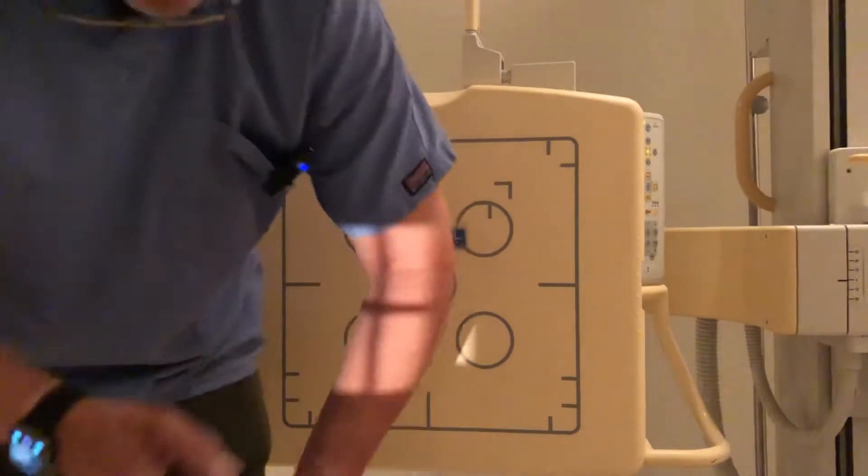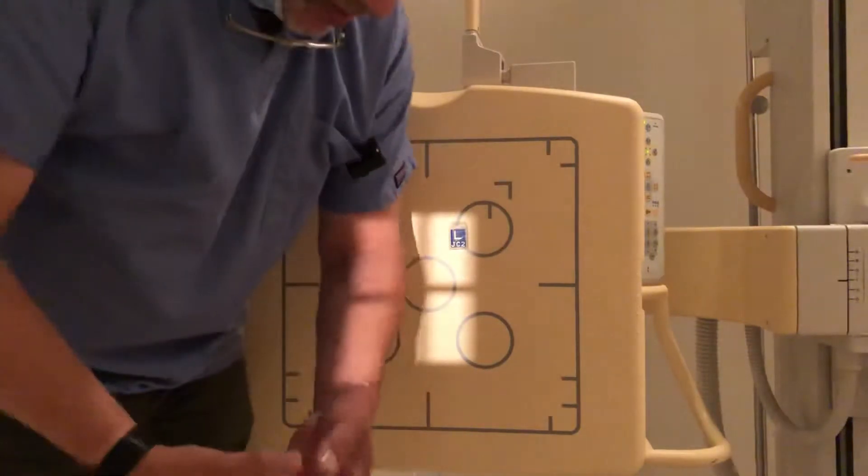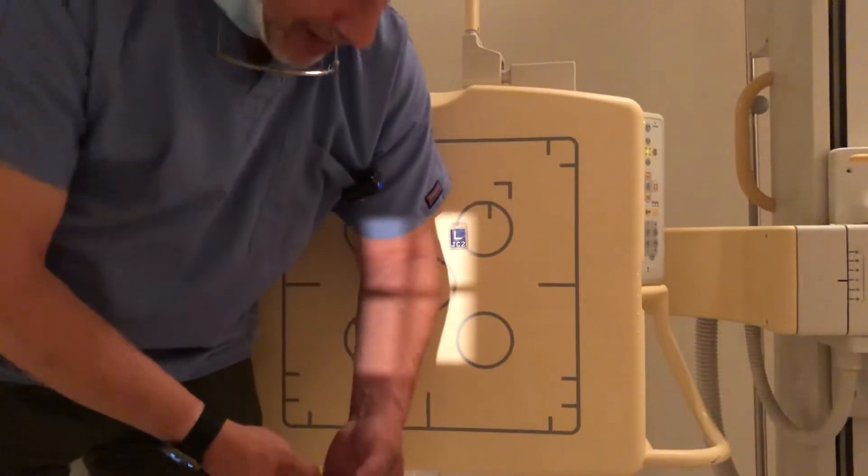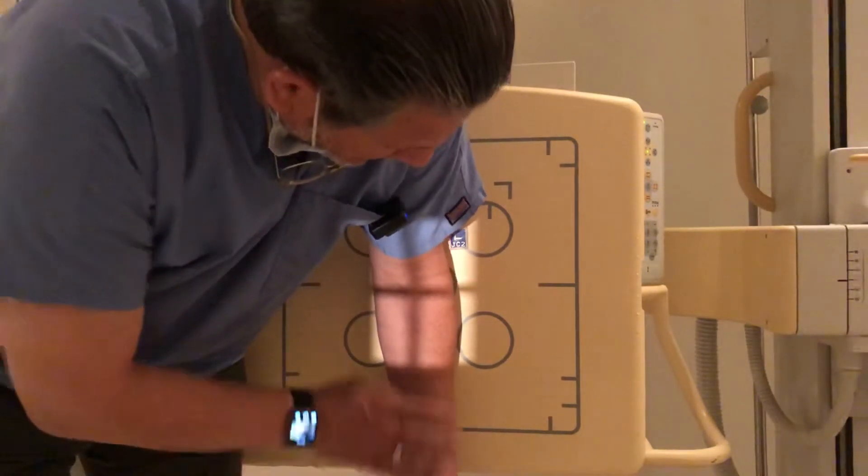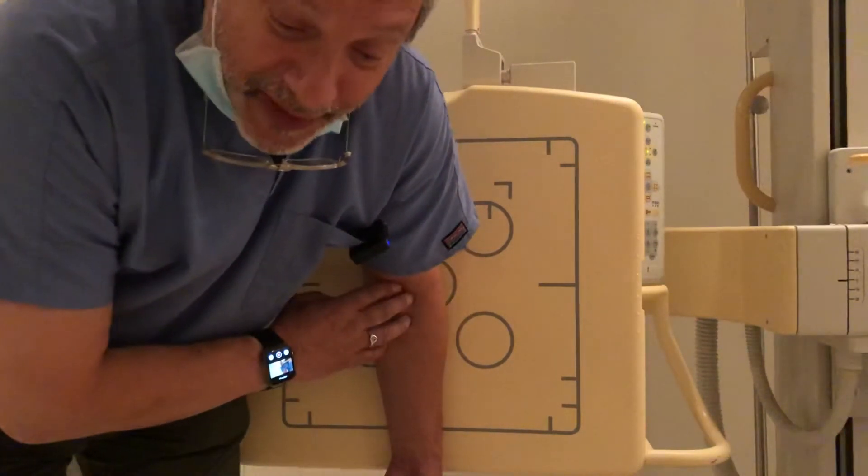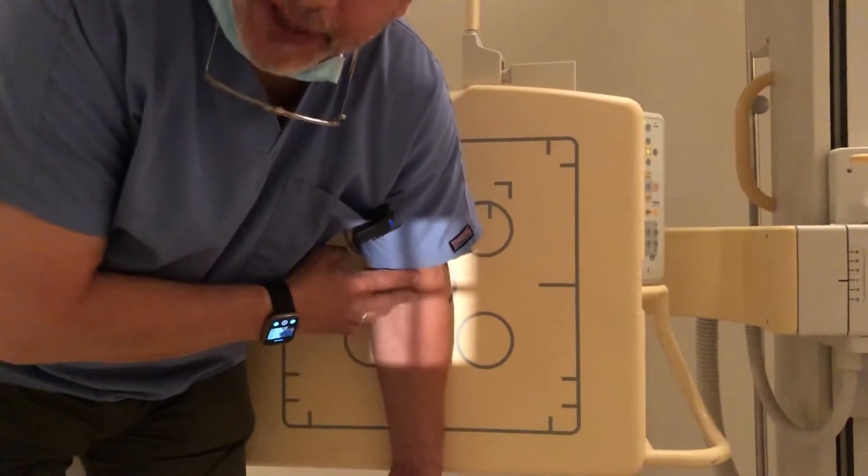For this one, you're going to try to get the back of their arm onto the plate. So you'll go from here, have them bend at the hips like this. Okay. And now you have the proximal humerus or proximal forearm on the plate and that's good. Now you can shoot the elbow here.